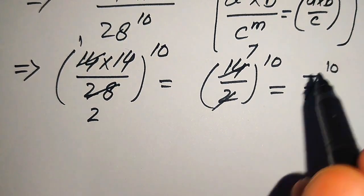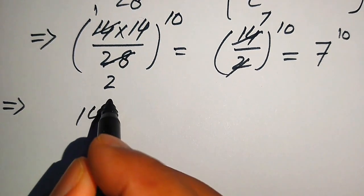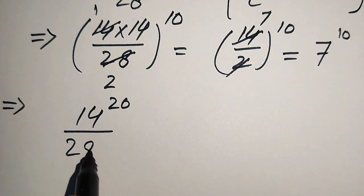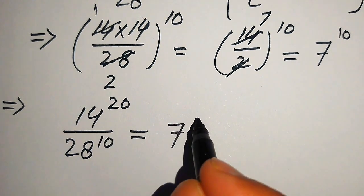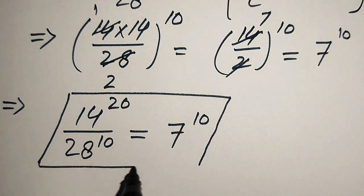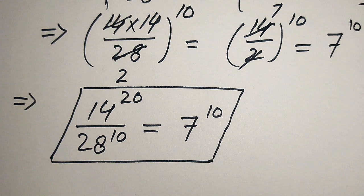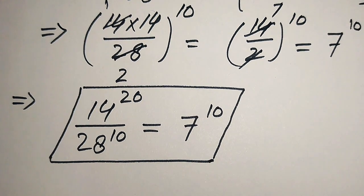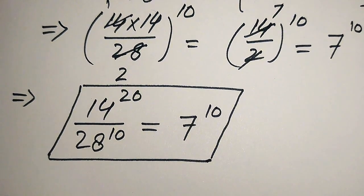So the final answer is: 14^20 divided by 28^10 equals 7^10. This is the simplified form obtained from both methods. I hope you liked both methods — if you have any other approach, please write it in the comment section. Thank you so much for watching; please subscribe to my channel for more videos.